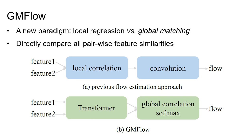In this work, we reformulate Optical Flow as a global matching problem, which identifies the correspondence by directly comparing all pairwise feature similarities, and Optical Flow is obtained with a differentiable softmax matching layer. Such a formulation calls for more discriminative feature representations, for which the transformer becomes a natural choice.